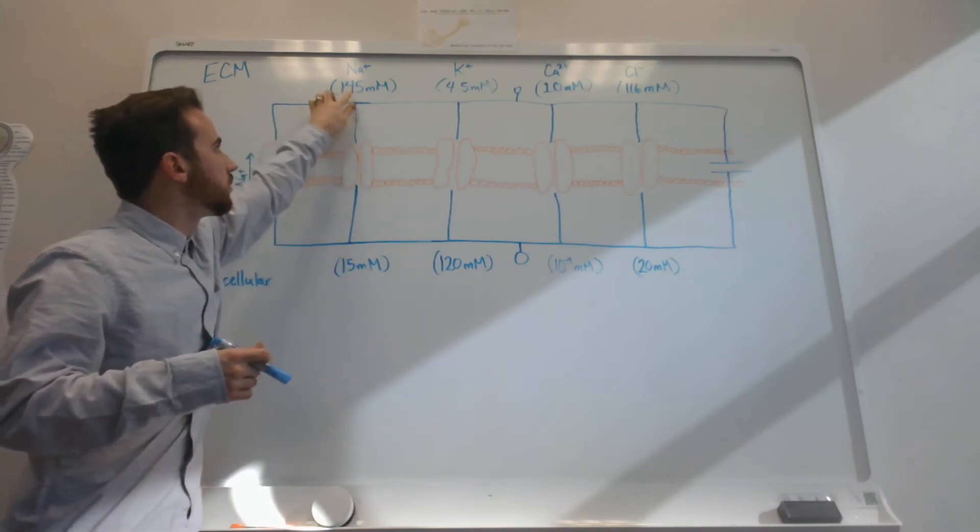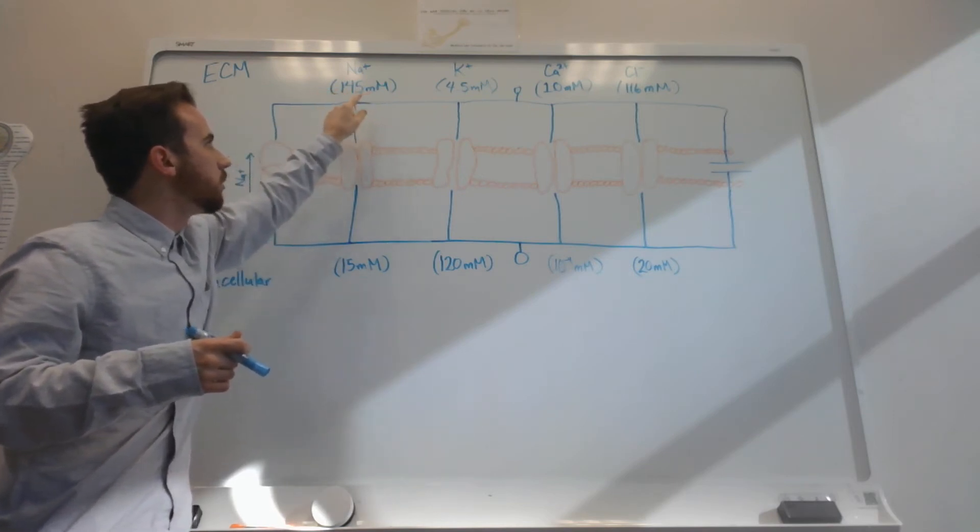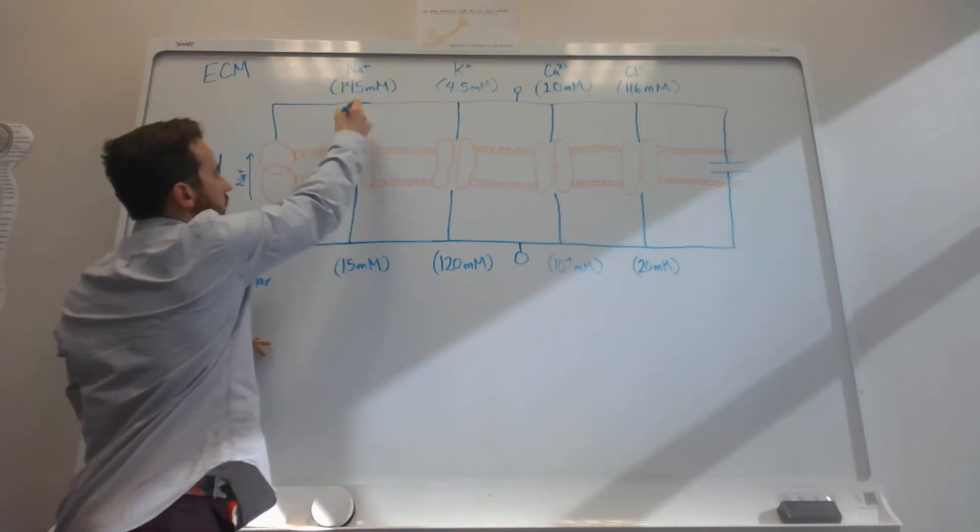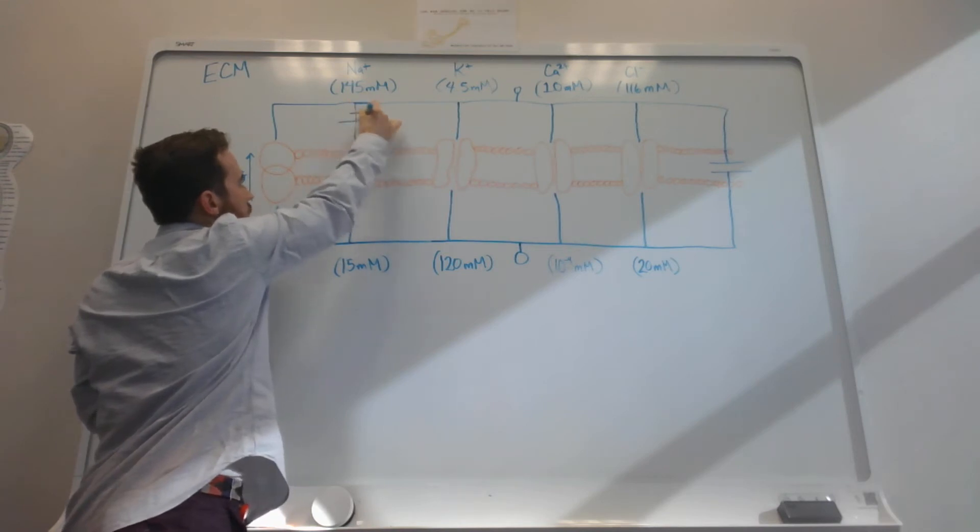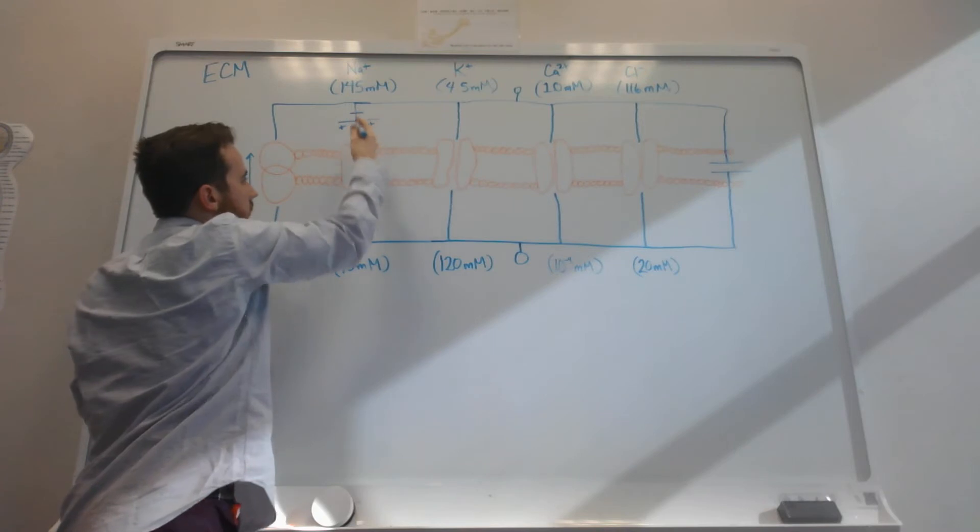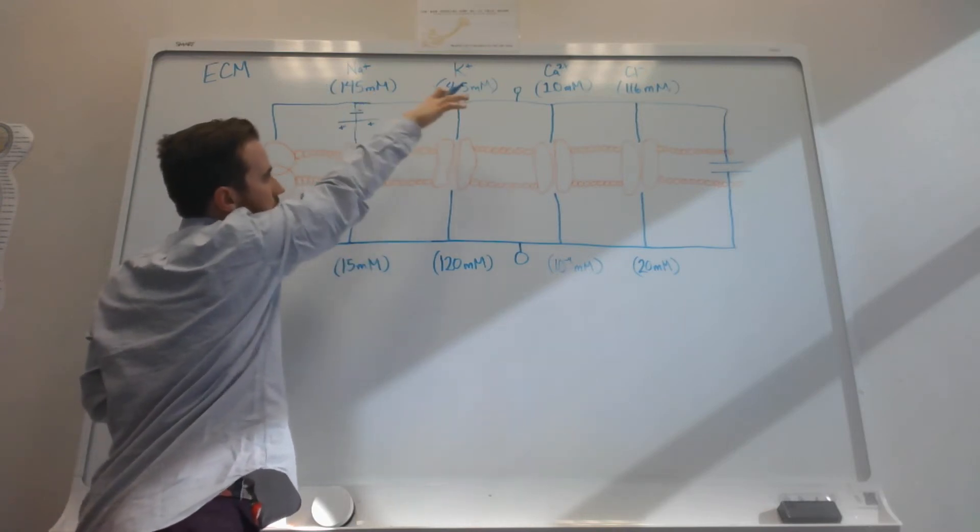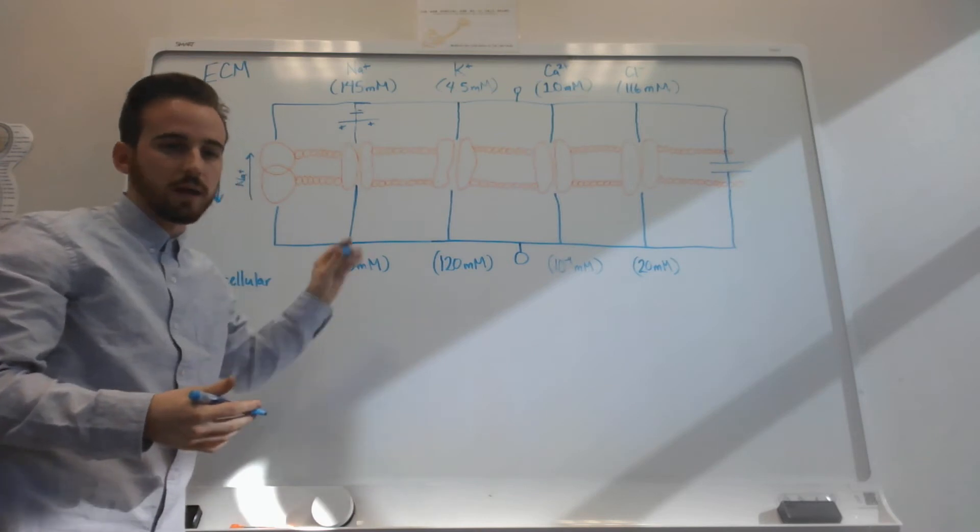As you can see with sodium, we have 145 millimolars of sodium outside the cell and 15 millimolars in. What does that mean? That means that when we draw our battery here, our positive charges are going to be wanting to go into the cell, our negative charges are going to be going out of the cell in that case.